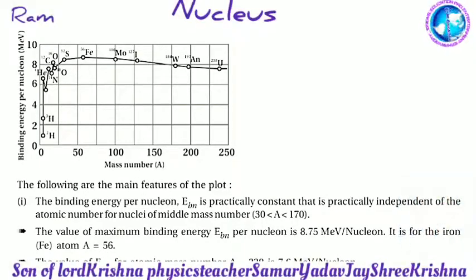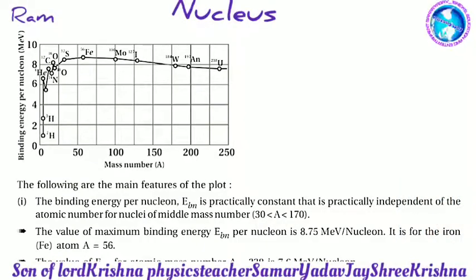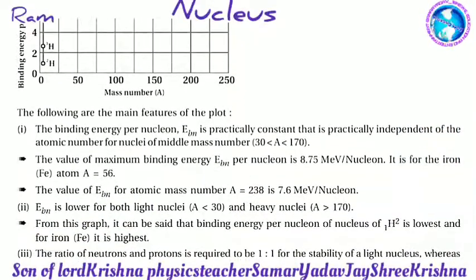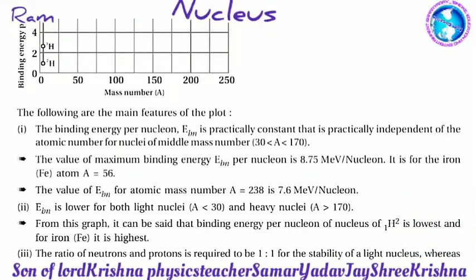The following are the main features of the plot. The binding energy per nucleon Ebn is practically constant, that is practically independent of the atomic number, for nuclei of middle mass number (30 < A < 170). The value of maximum binding energy per nucleon is 8.75 MeV per nucleon, for the iron (Fe) atom at A = 56. The value of Ebn for A = 238 is 7.6 MeV per nucleon.